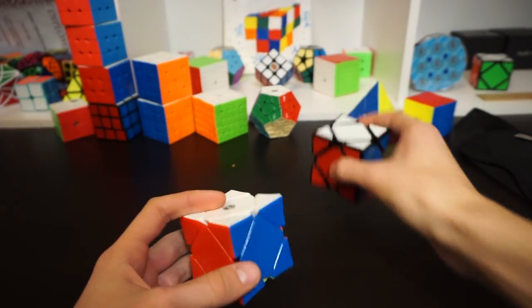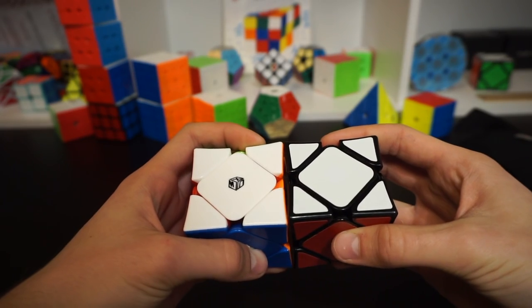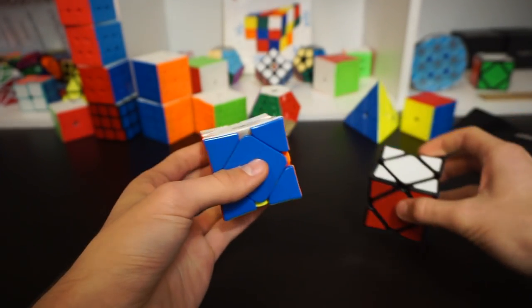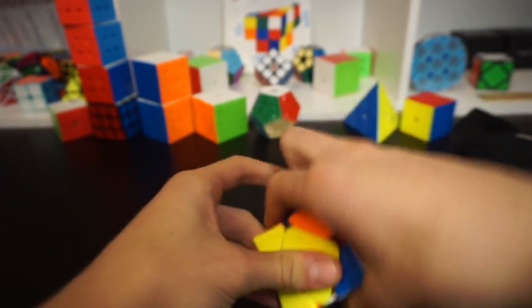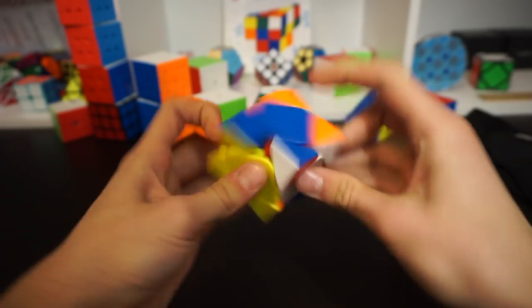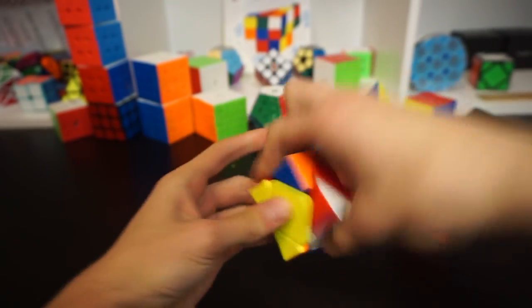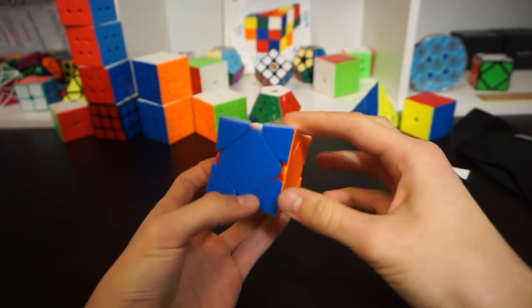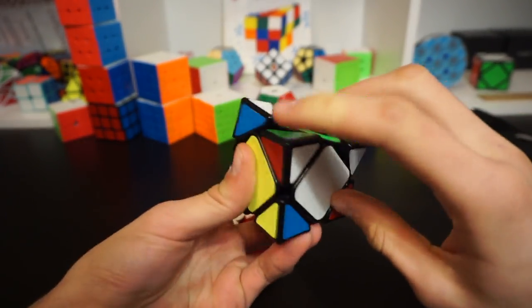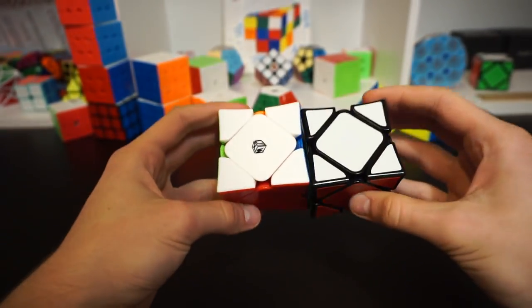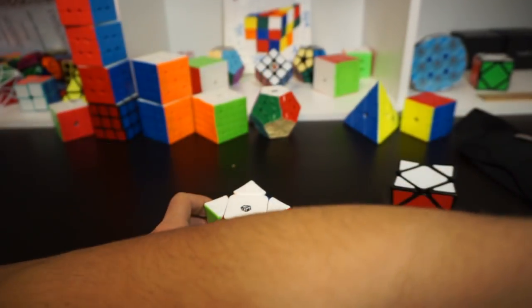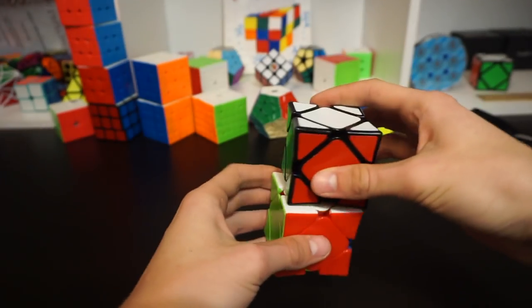Here we have skewb. I'll be using the X-Man Wingy skewb and this is actually my main, the stickerless one, although it's not that fast. I really want it to be a little faster but I really want to get a sub-5 average and maybe a sub-10 average because there are two rounds.